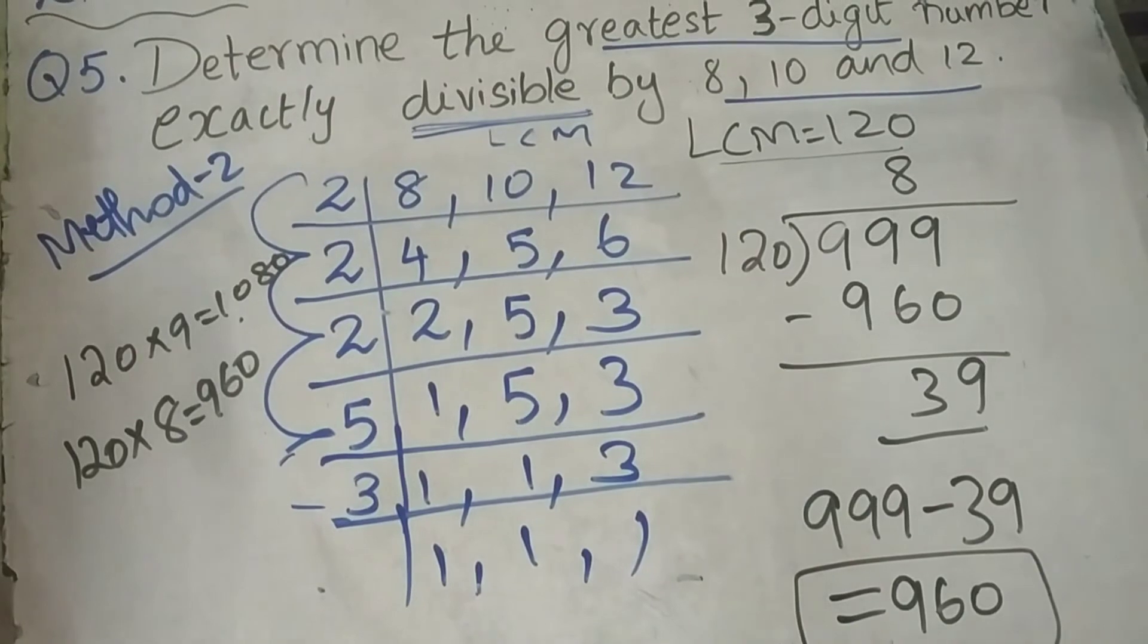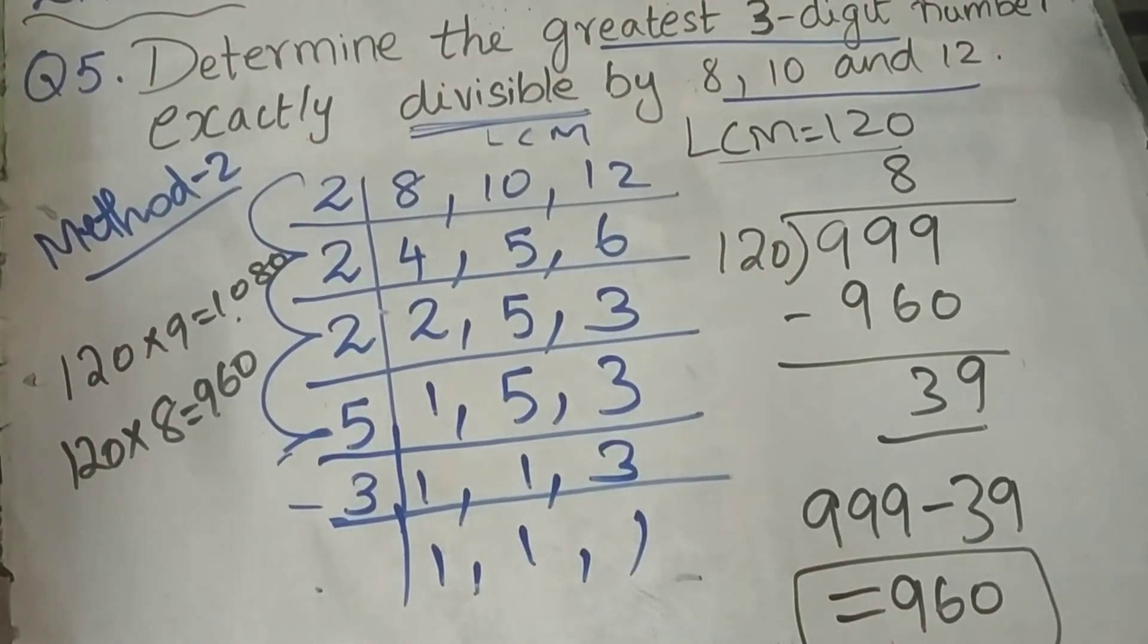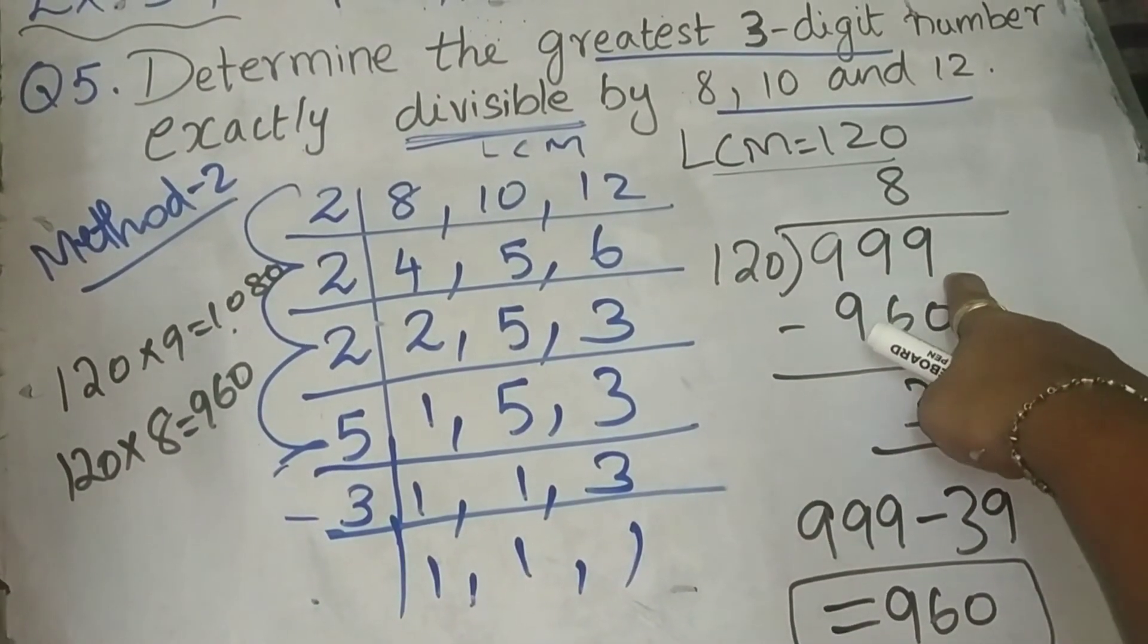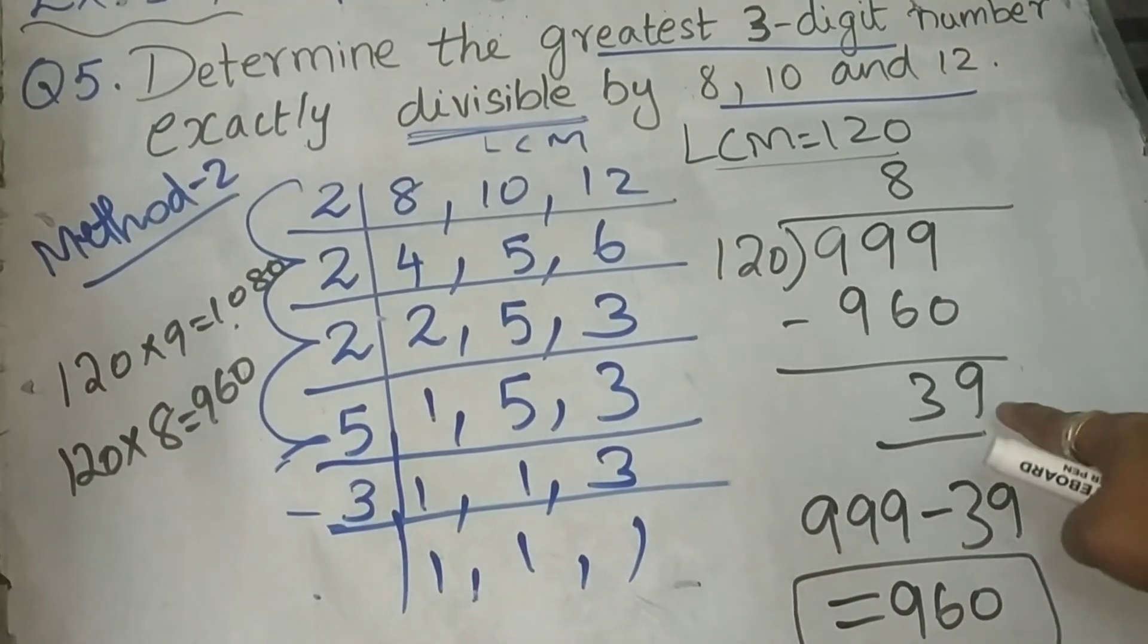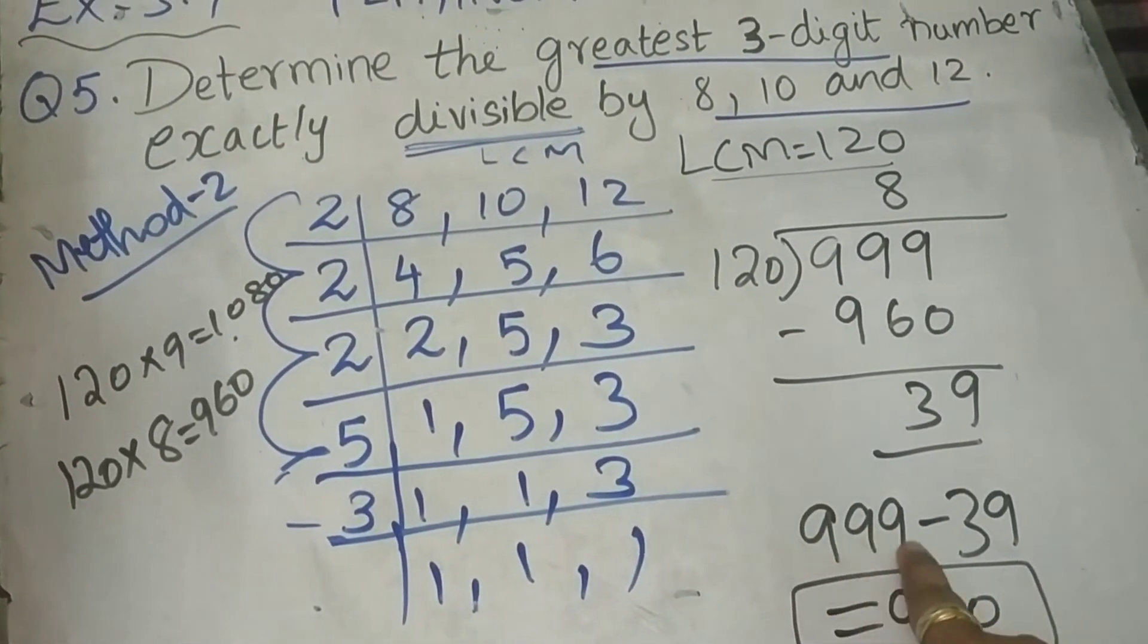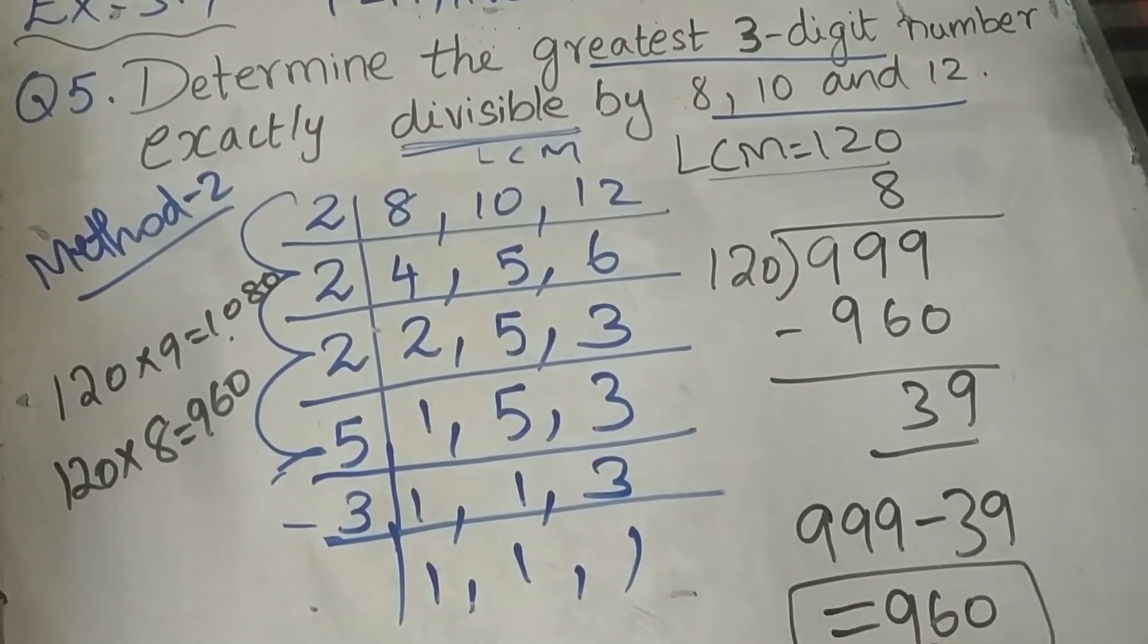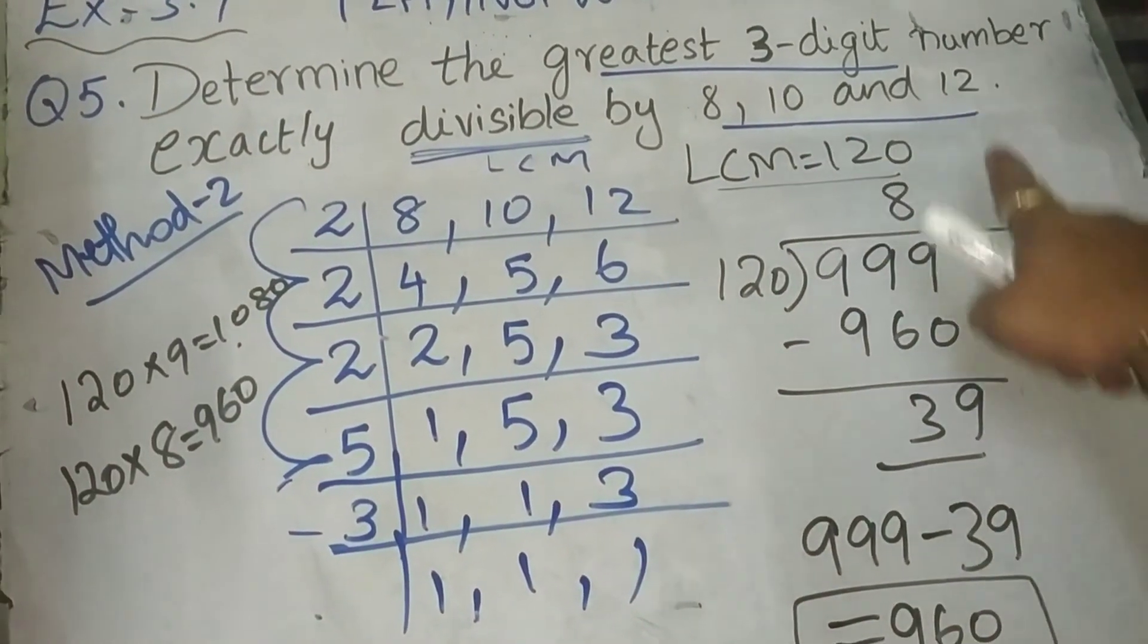Am I clear? So, let me repeat this step. As usual, we will find the LCM. Then, the greatest 3 digit number is 999. I am dividing with the LCM 8 times. I am leaving the remainder. 999 minus 39, it is 960. So, 960 is exactly divisible by 8, 10 and 12.